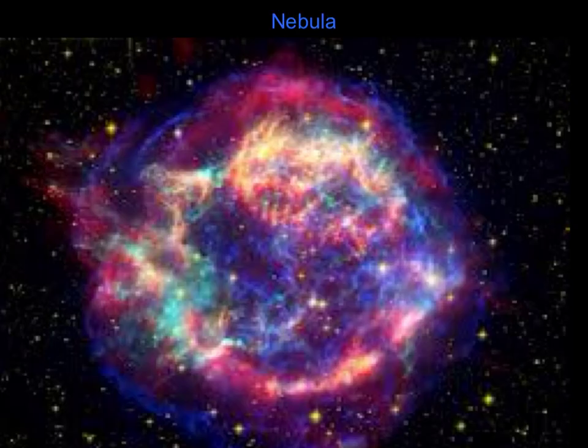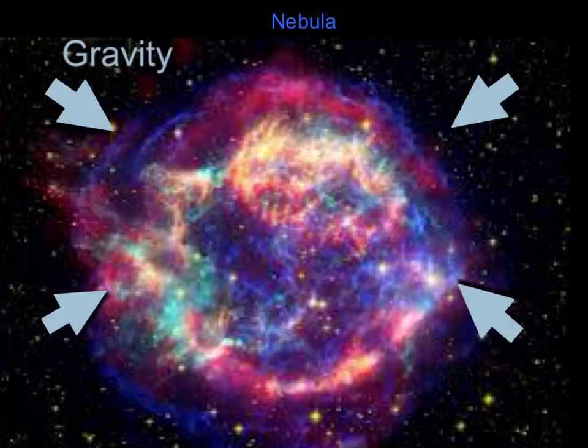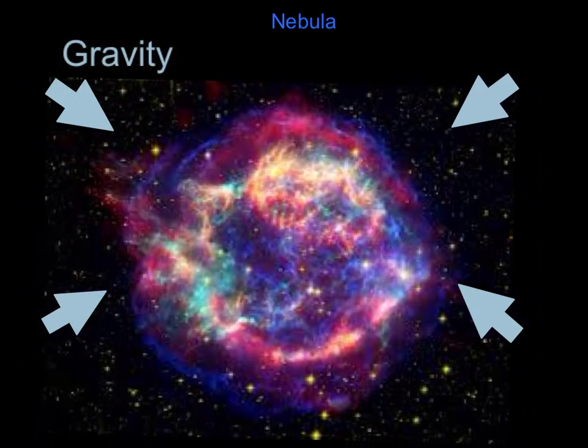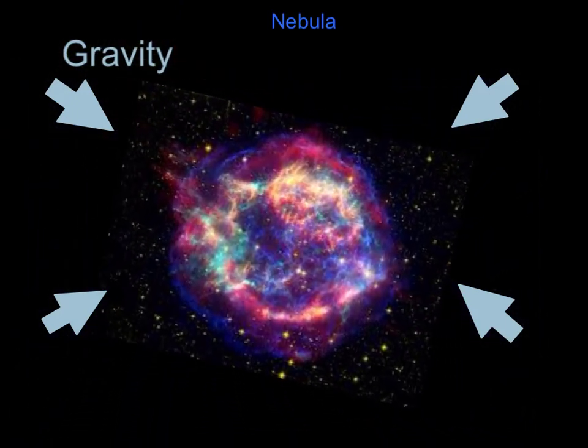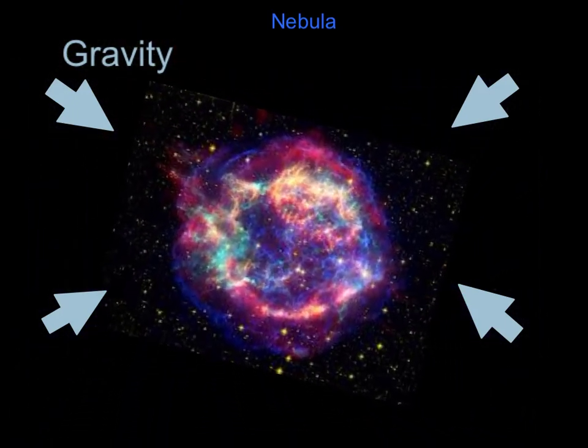All stars start life as a nebula. A nebula is a huge diffuse cloud of predominantly hydrogen gas that slowly starts to collapse under the force of gravity. Gravity causes the nebula to collapse inwards on itself, getting smaller and smaller as gravity gets stronger. As the nebula collapses, the particles get closer and closer together, causing increased friction between them, generating heat.